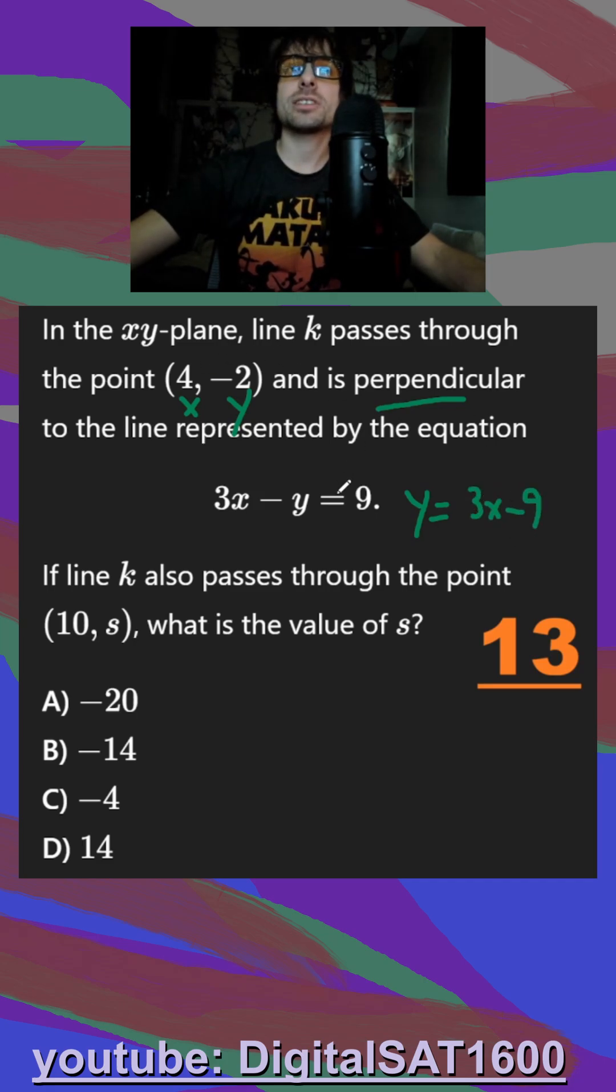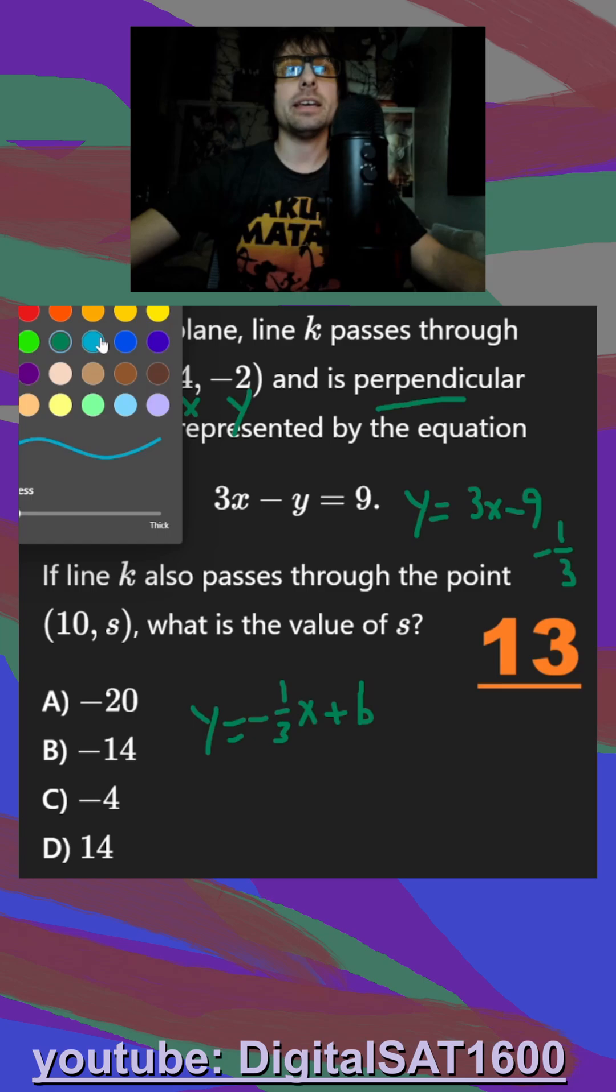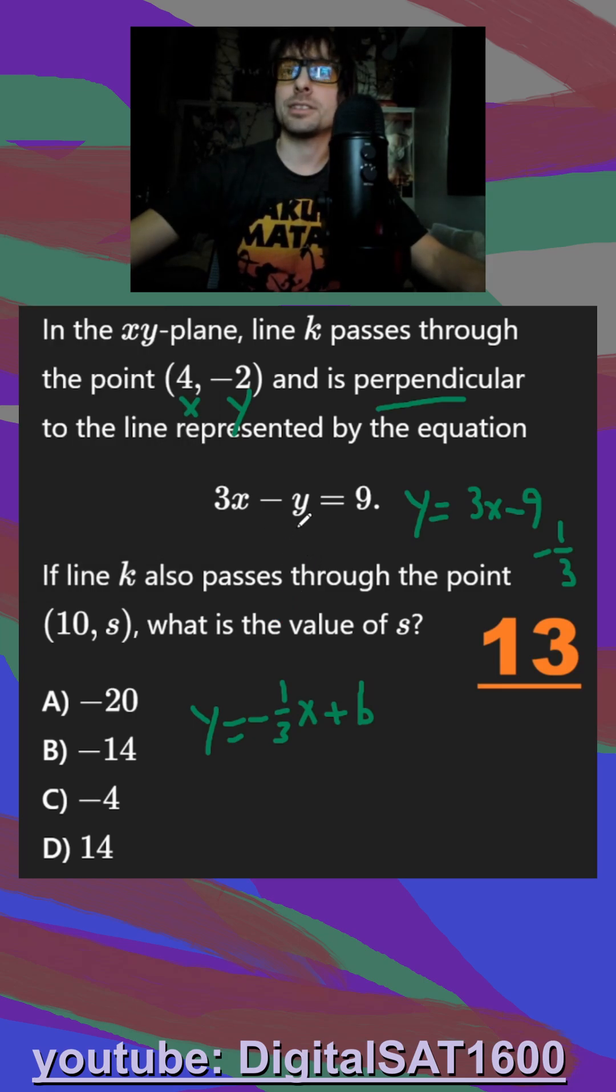And since this first line is perpendicular, the slope of the first line would be negative 1 third, negative reciprocal. So I can actually rewrite this line. I can say y is equal to negative 1 third x plus b. And then I can plug in the x and y value they gave us to solve for b.